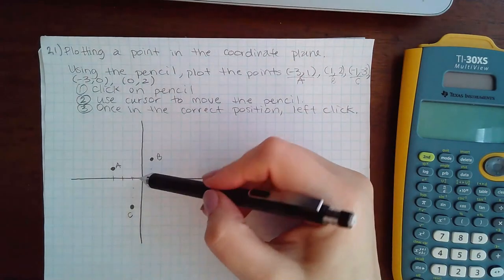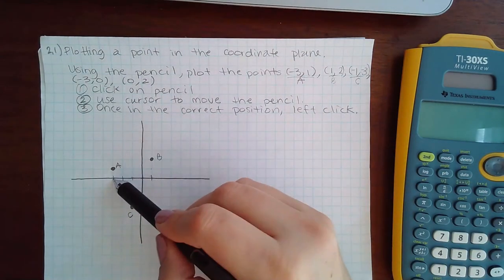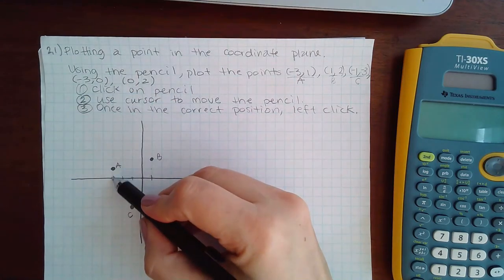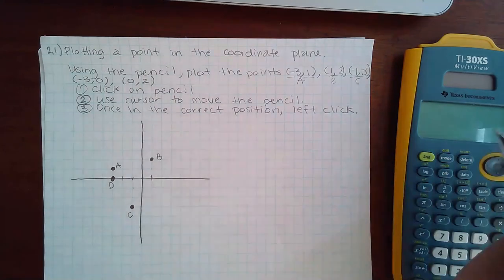Here I have to move 1, 2, 3 to the left, but then I do not move up or down. So the point is right there on the x-axis.